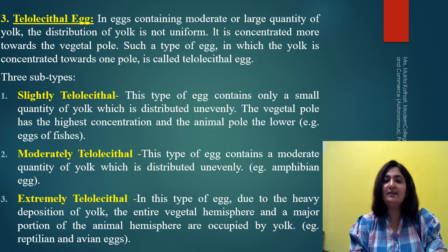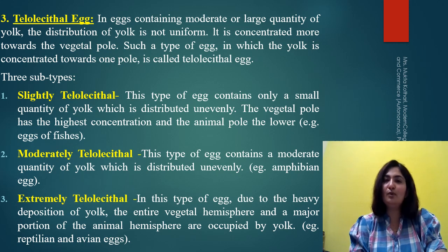As you can see in the presentation slide, there are three subtypes of telolecithal eggs: slightly telolecithal, moderately telolecithal, and extremely telolecithal. Slightly telolecithal eggs generally have a small amount of yolk, but it is unevenly distributed. The vegetal pole will have maximum yolk whereas the animal pole will have lesser yolk.